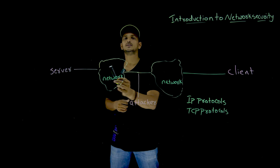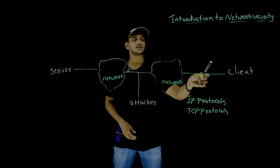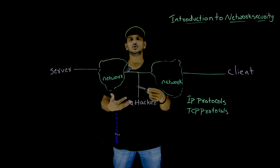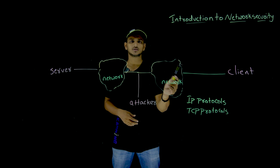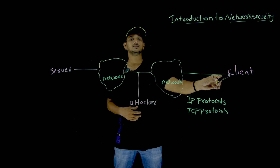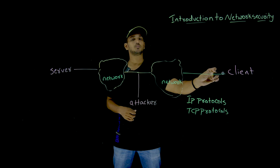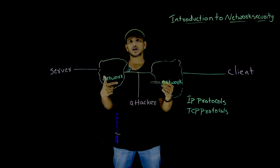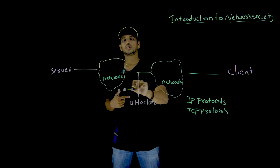Let's take an example of client and server. Client means any mobile or desktop where you open an application. That application is going to hit the server to get the data, so the client and server are going to exchange information — some data is passing between them. Assume the client is in India and the server is located in United States, meaning the messages are passing over the internet.